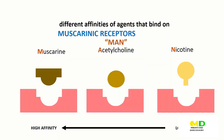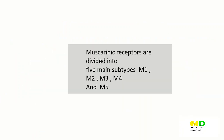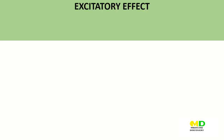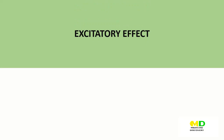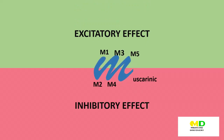However, only M1, M2, and M3 receptors have been functionally characterized. Some receptors like M1, M3, and M5 produce excitatory effects, while M2 and M4 produce inhibitory effects. For example, M1 and M3 receptors excite and increase peristalsis of the gastrointestinal tract. Also, M2 receptor has an inhibitory effect on the heart and is responsible for the decreased heart rate in the parasympathetic nervous system.